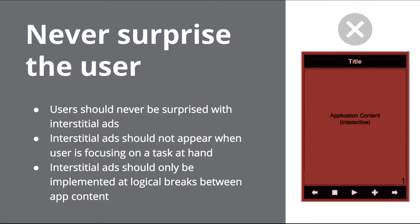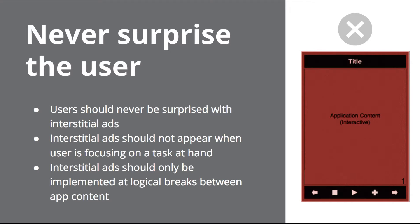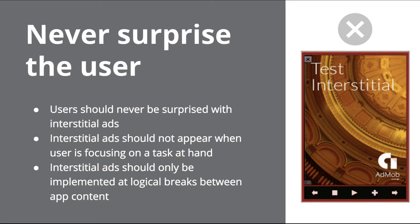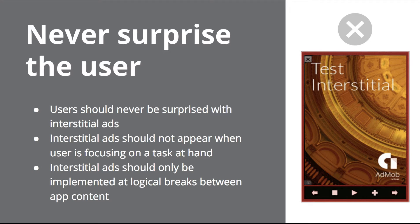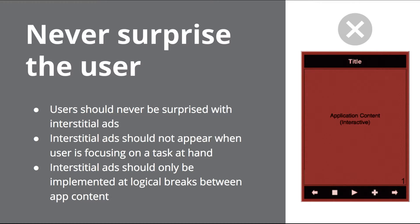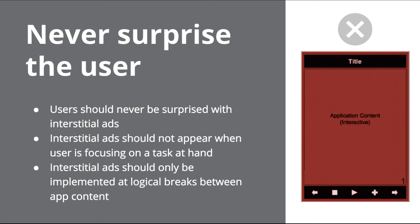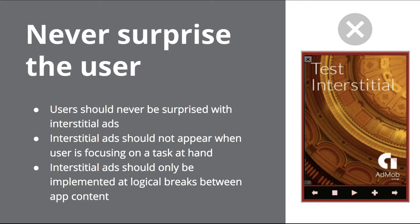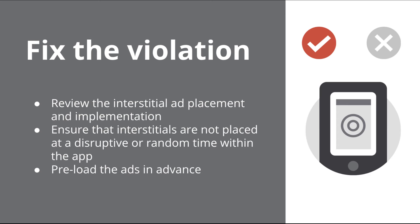Interstitials should only be implemented at logical breaks between your app's content. For example, at breaks in pages, changing stages of the app, or moving levels in a gaming app. This will ensure that the user is prepared to engage with the interstitial ad and not click on it by accident.